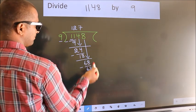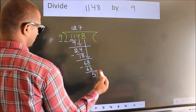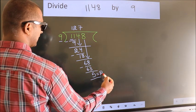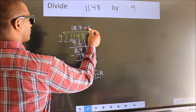No more numbers to bring down. So, we stop here. This is our remainder. This is our quotient.